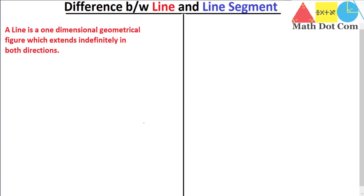A line is a one-dimensional geometrical figure which extends indefinitely in both directions. As its definition indicates, it has only one dimension, that is length. It does not have width or breadth. So you can say this is a one-dimensional figure and it extends indefinitely. It has no ending points and it goes forever in both directions. This is the definition of a line.